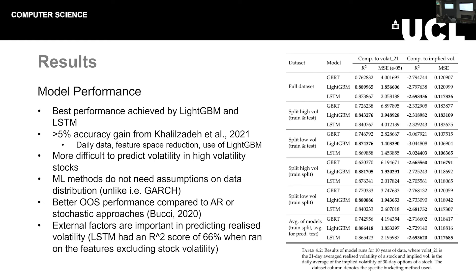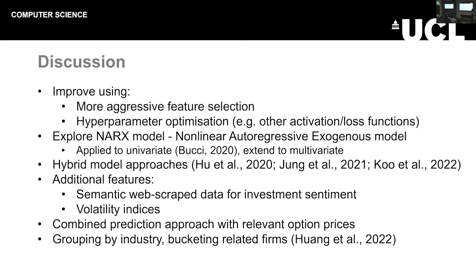I did investigate option prices a little in my results — the second column — but there was still a large mean square error with implied volatility of option prices, around 10 to 12%, which could be further investigated. Also, grouping by industry has shown interesting prediction properties, so bucketing related firms together — as done in Hwang 2022 — would be interesting, for example where a firm is a client of another firm and they have a codependent relationship that could also affect each other's volatility.